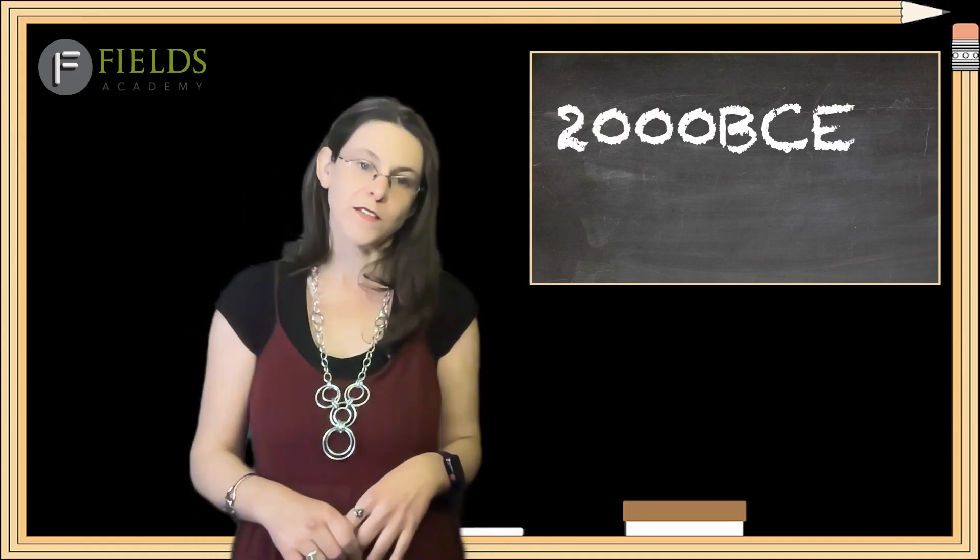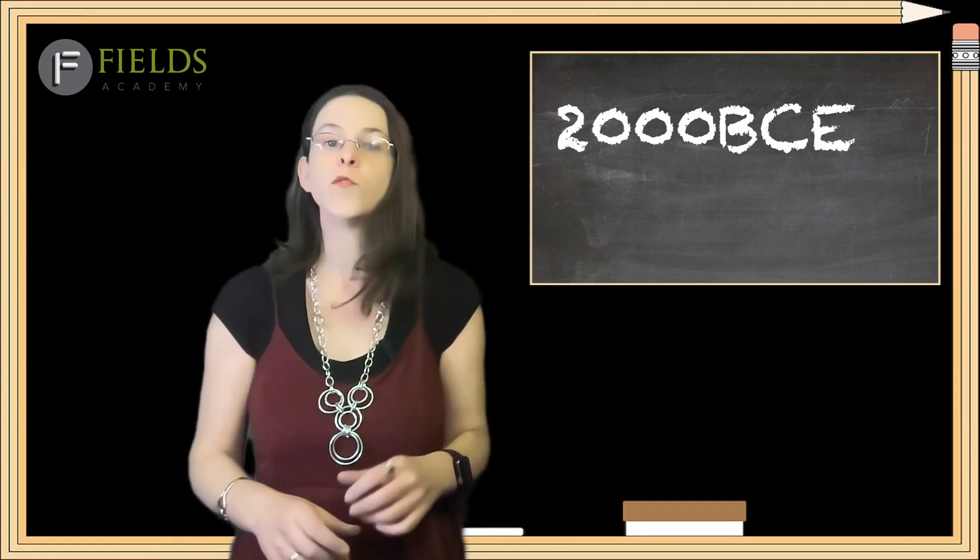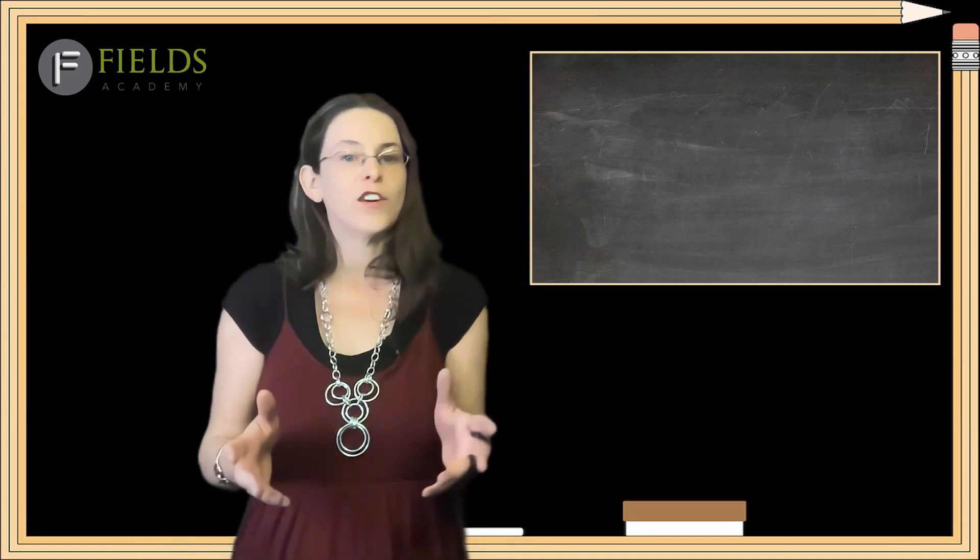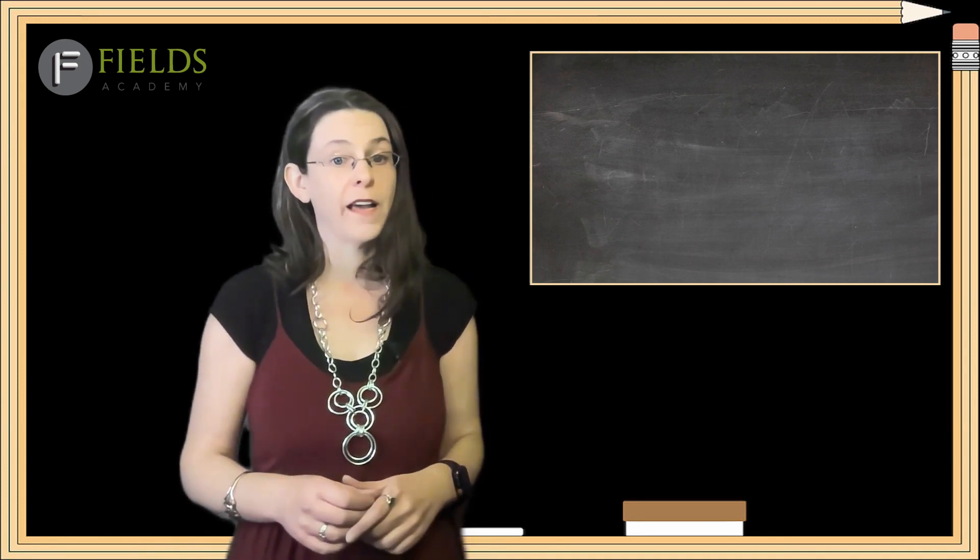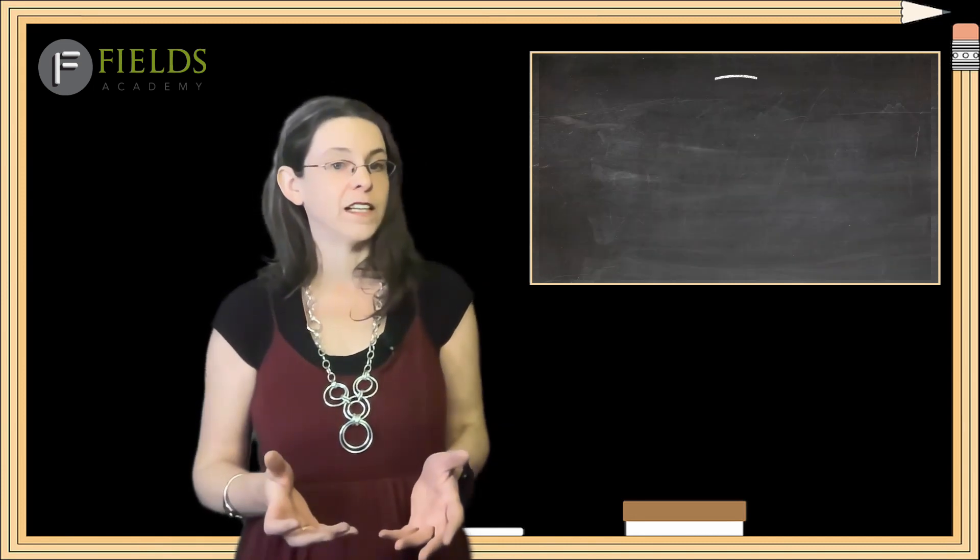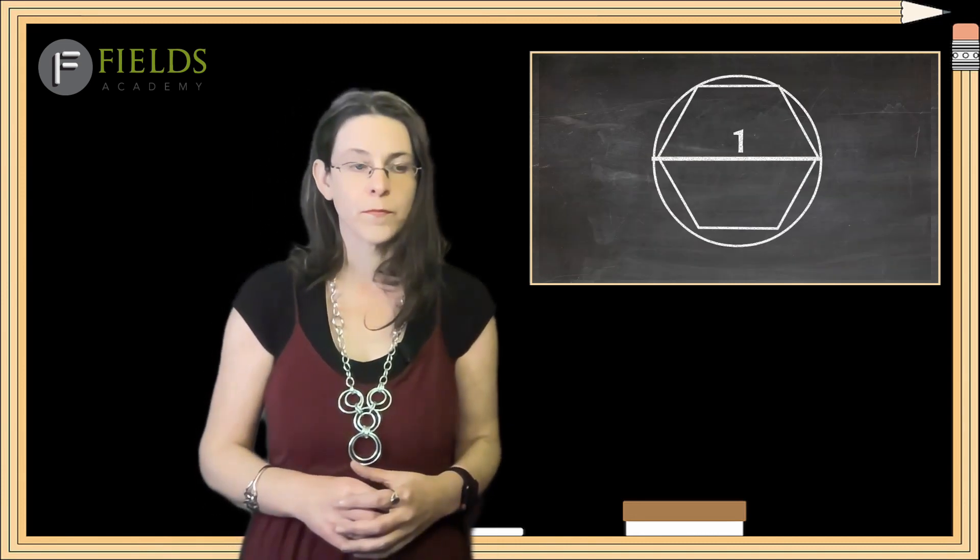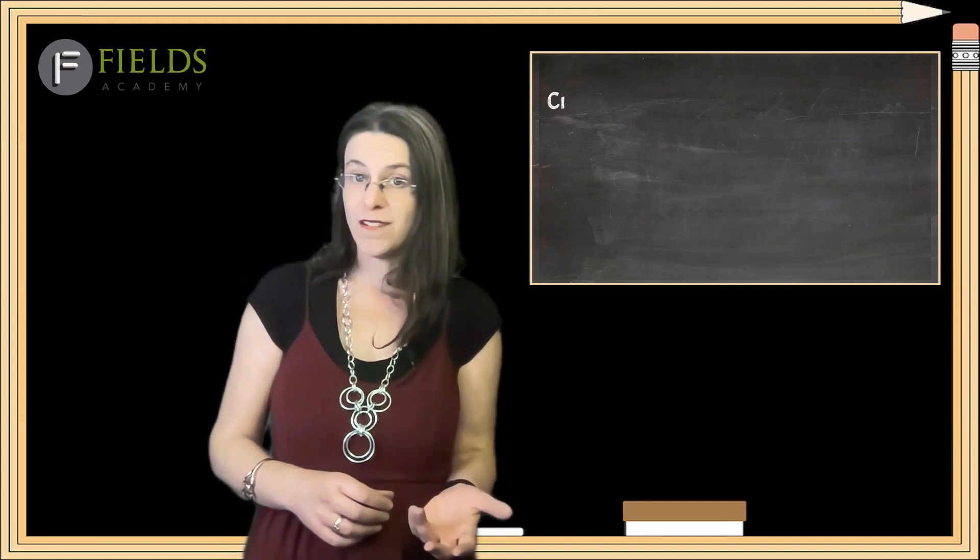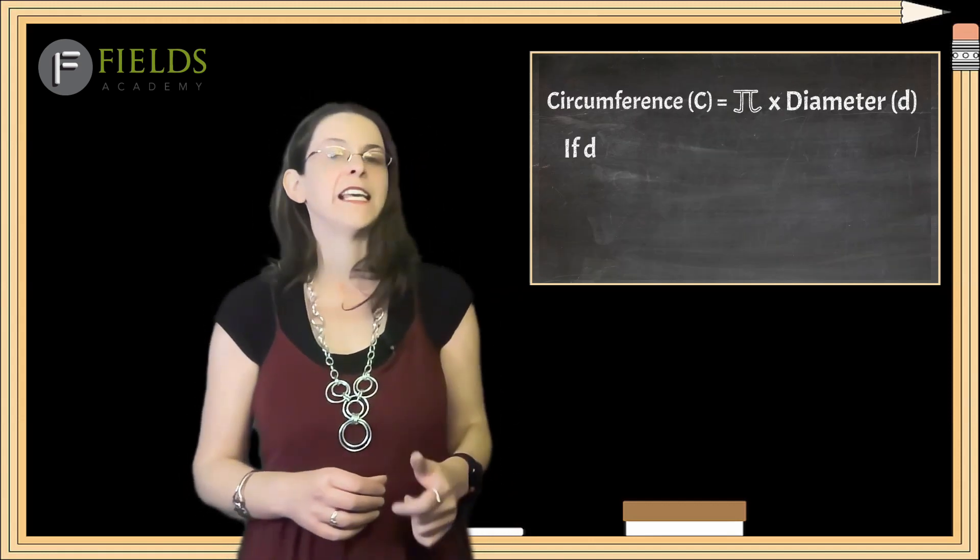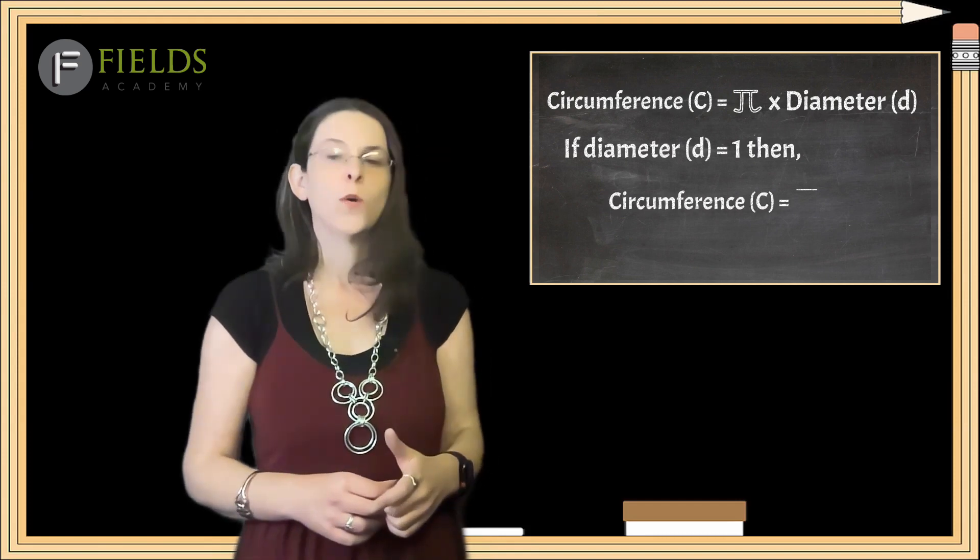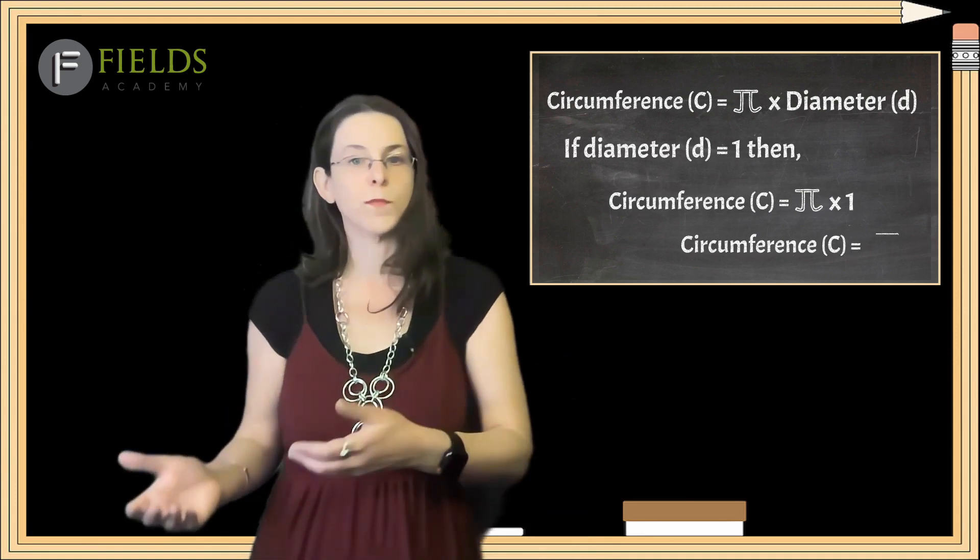As far back as 2000 BCE, the Babylonians and Egyptians were aware of pi and what it stood for, even if they couldn't accurately calculate it. Their closest estimate to pi was the perimeter of a hexagon inscribed inside of a circle with a diameter of 1. Why a diameter of 1? Because if the diameter equals 1, then circumference equals pi times diameter, which equals pi times 1, or circumference equals pi.